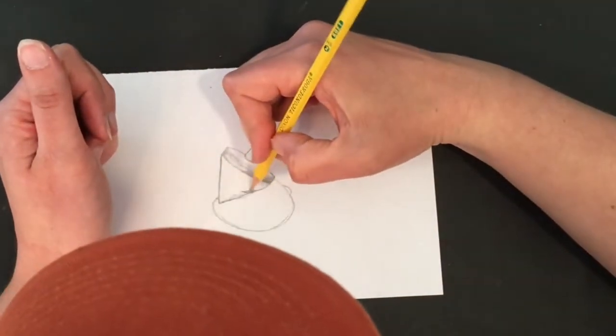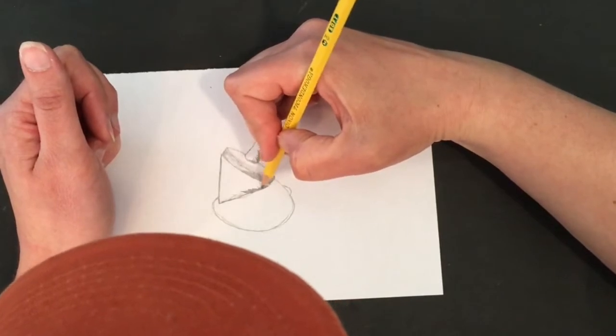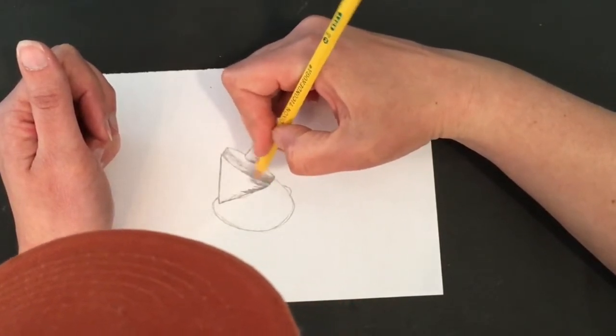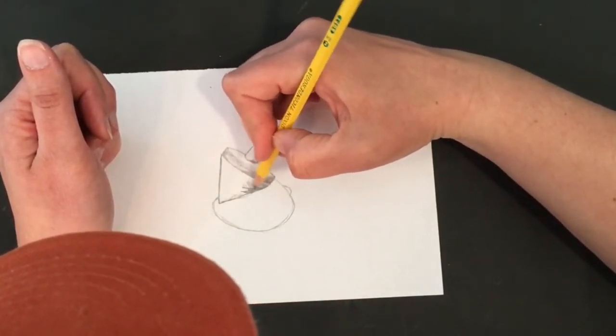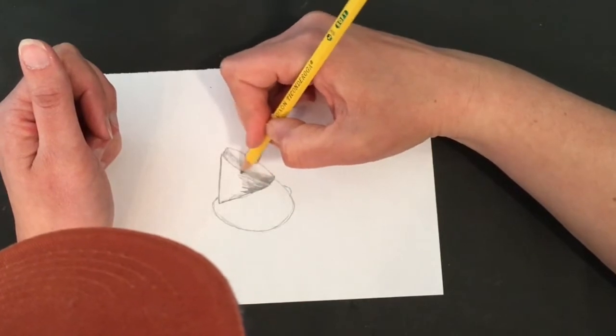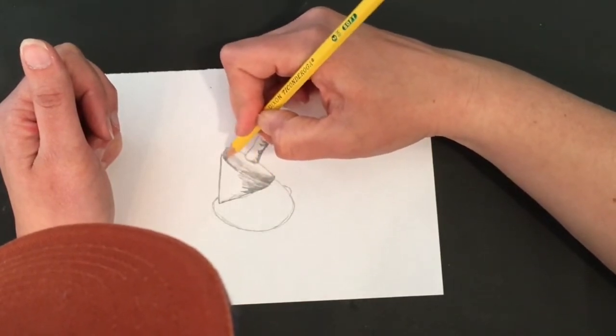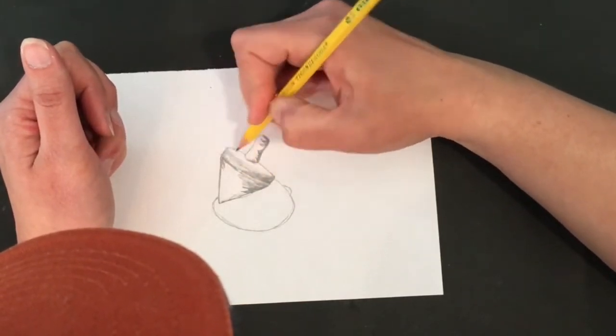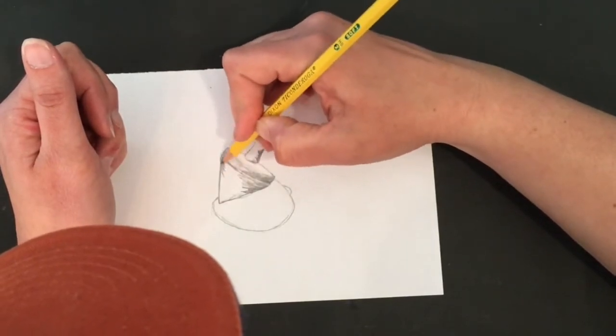Now this is a curved object, so let's remember that when we are drawing a curved object here, we are using our curved shading stroke.